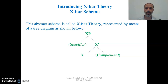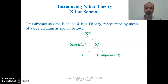X-bar theory is represented by means of a tree diagram. We start from the bottom to the top. At the bottom node, we have the head, which is X, associated with a complement. In generative syntax, a complement may refer to the traditional meaning of complement, or any kind of object is a complement. X with its complement or object together project into an X-bar, which is an intermediate category that exists in the data of language.